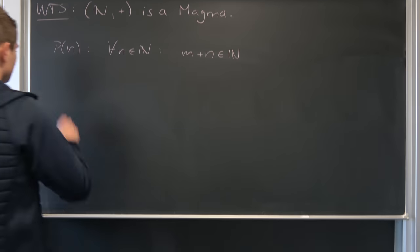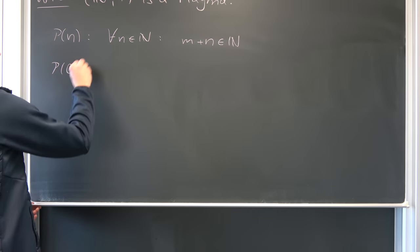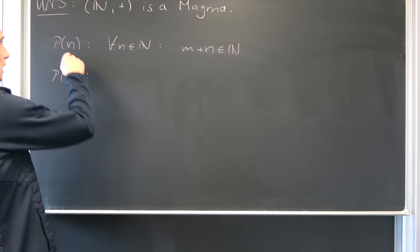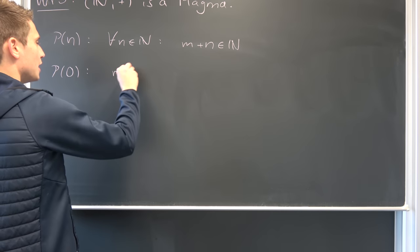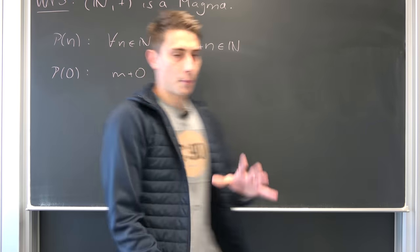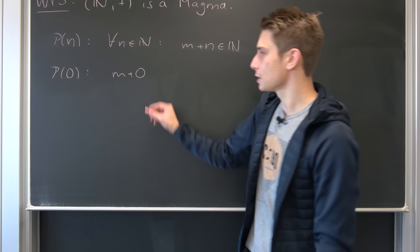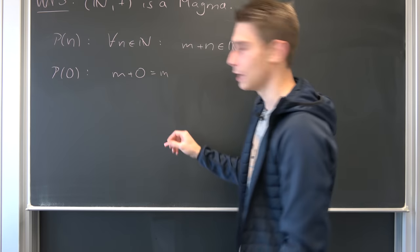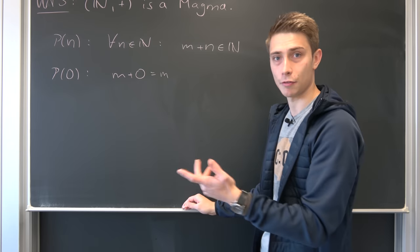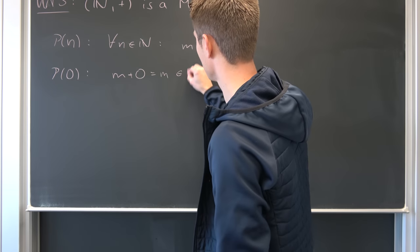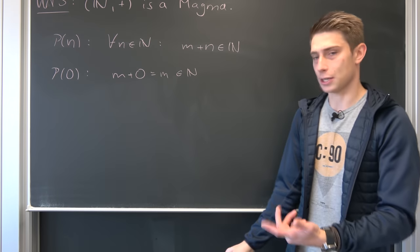So starting off with the base step P(0). Well, what do we have then? Plugging in the 0 into this n we have m plus 0. Well, by the first rule of addition this is nothing but m. And we have chosen m to be a fixed but arbitrary natural number. So this does hold.